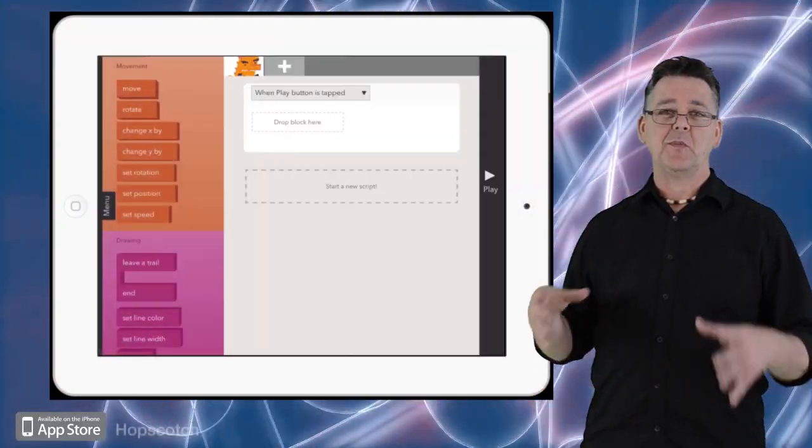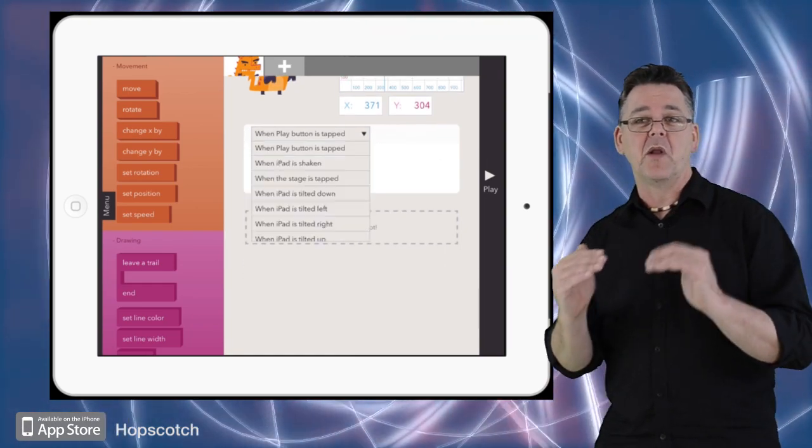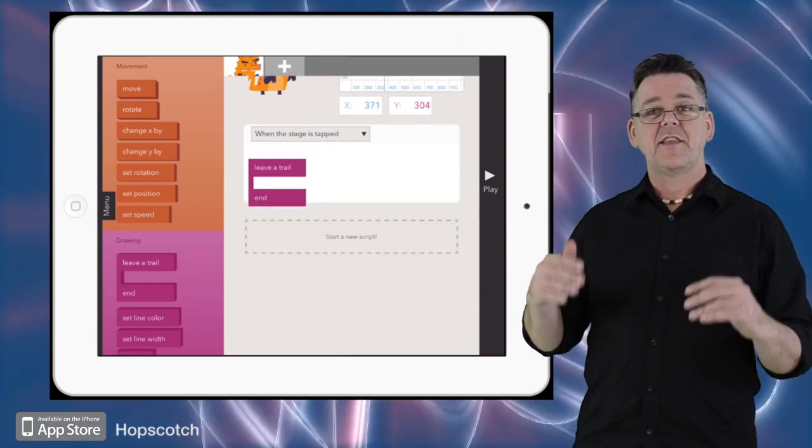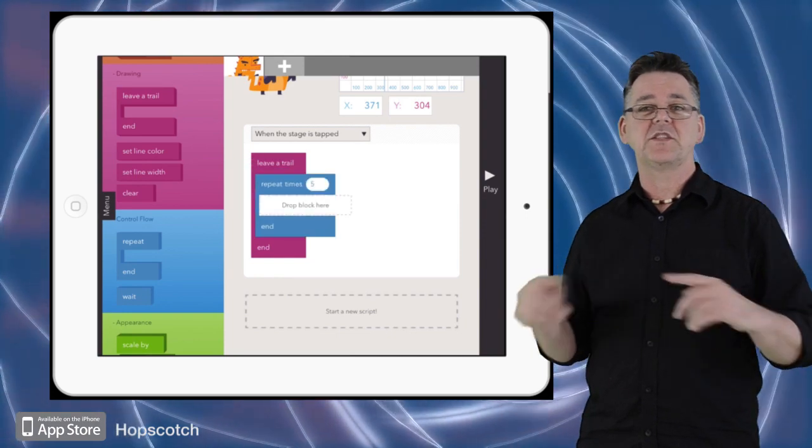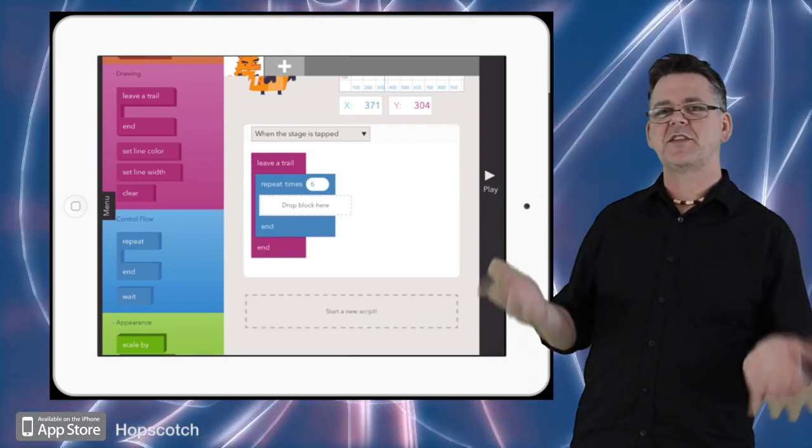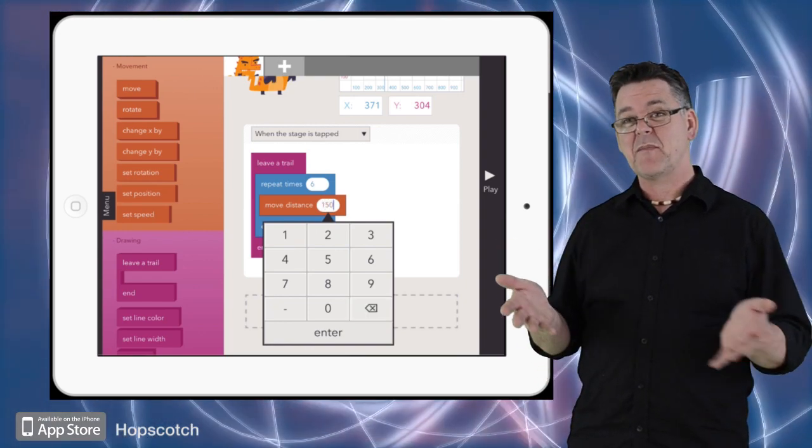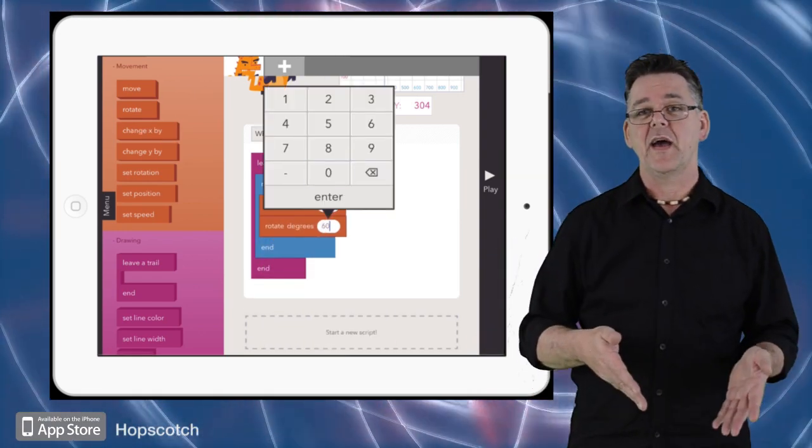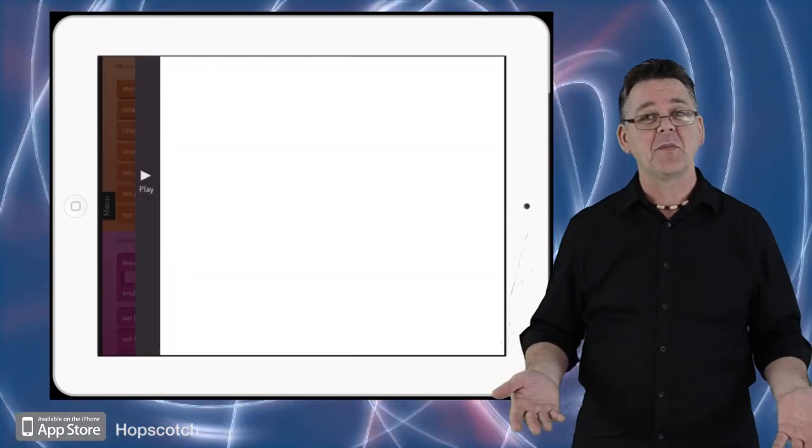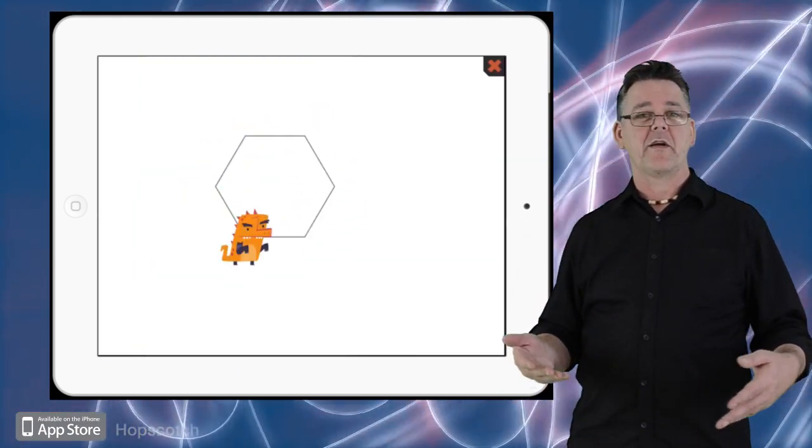For iPad users, it's worth taking a look at Hopscotch. Hopscotch uses visual code blocks, just like Scratch, that can be assembled together to form sequences and instructions. And although it has a limited range of blocks compared to something like Scratch, the fact that it makes use of the touch screen and the accelerometer in the iPad opens up some really interesting possibilities for creative programming ideas.